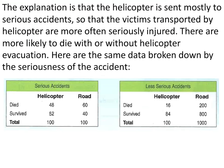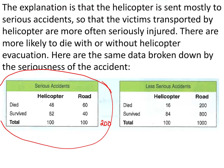Here are the same data broken down by the seriousness of the accidents. Of the serious accidents, there are 200 total. If half are transported by helicopter and half on the road, 48% of serious cases transported by helicopter do not survive, while 60% of serious cases transported by road do not survive. You can see that by splitting whether they're serious or less serious, there's a very large difference.